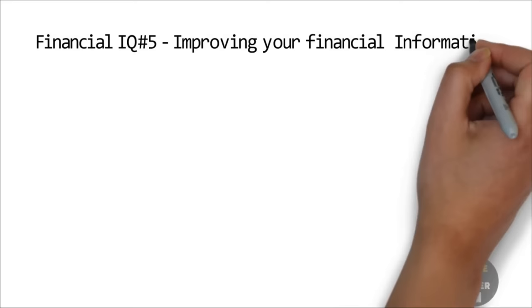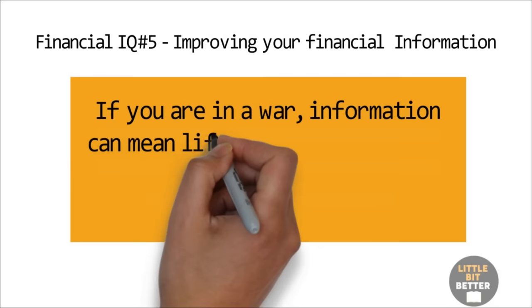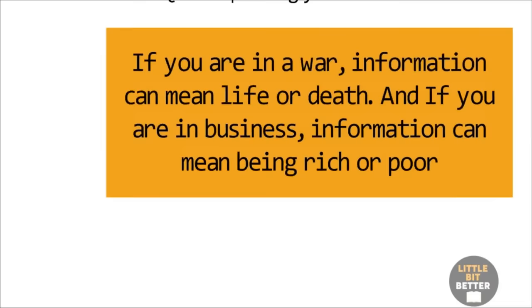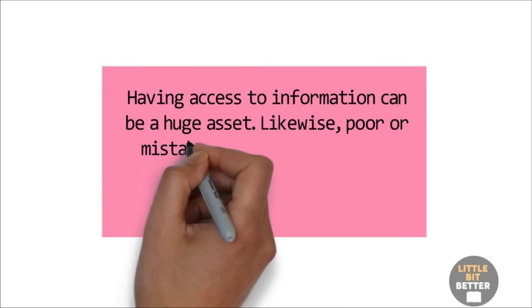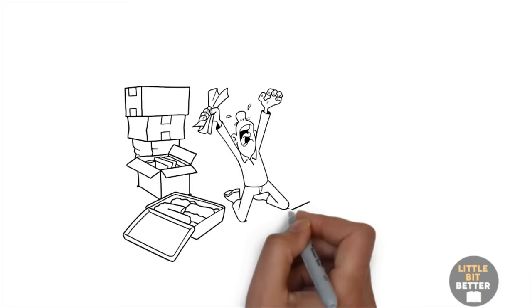Financial IQ number five, improving your financial information. If you are in a war, information can mean life or death and if you are in business, information can mean being rich or poor. With just a few dollars, some information, and the leverage of technology, young kids have become billionaires. The founders who created Facebook, Instagram, and YouTube have proved that. Having access to information can be a huge asset. Likewise, poor or mistaken information can be a huge liability. Poor information creates poor people. Many people who are struggling are doing so because they are using industrial or agrarian age information in the information age.